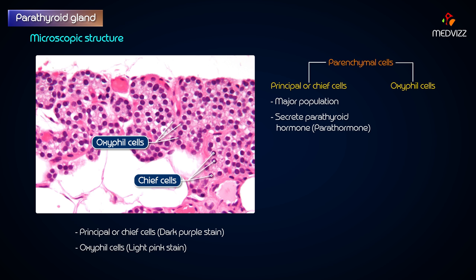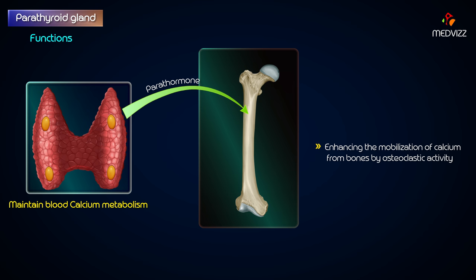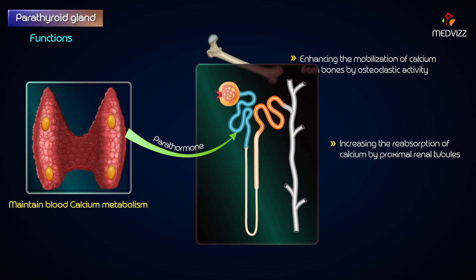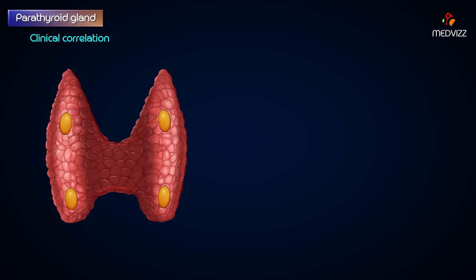The oxyphil cells form a minor population and their function is not known. The parathyroid hormone plays an important role in calcium metabolism. It maintains the blood calcium level by enhancing mobilization of calcium from bones through osteoclastic activity, increasing the reabsorption of calcium by proximal renal tubules, and promoting the absorption of dietary calcium from the small intestine.